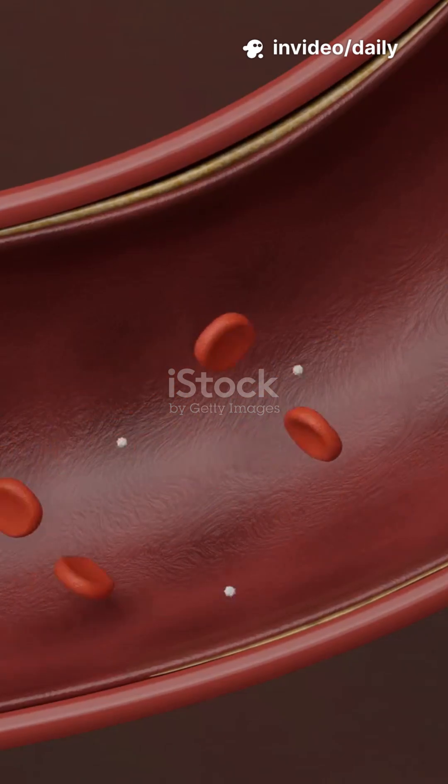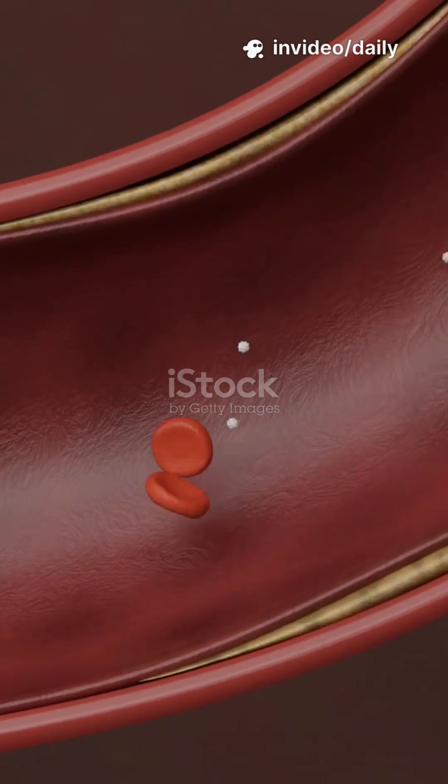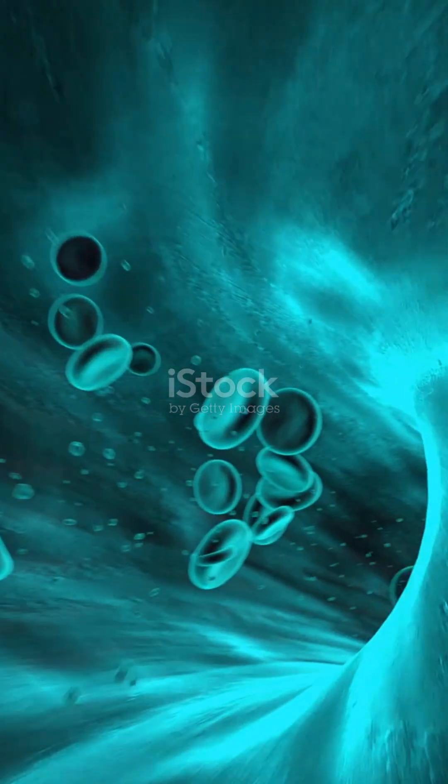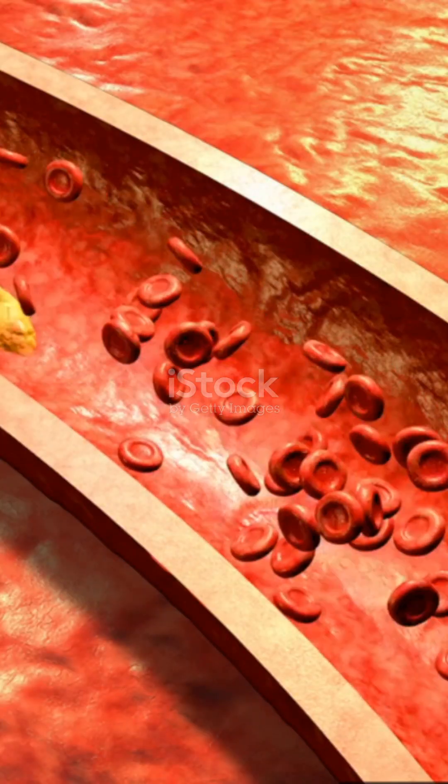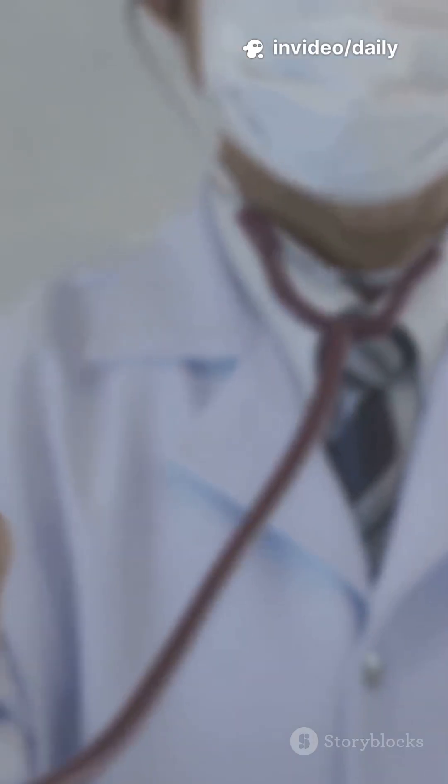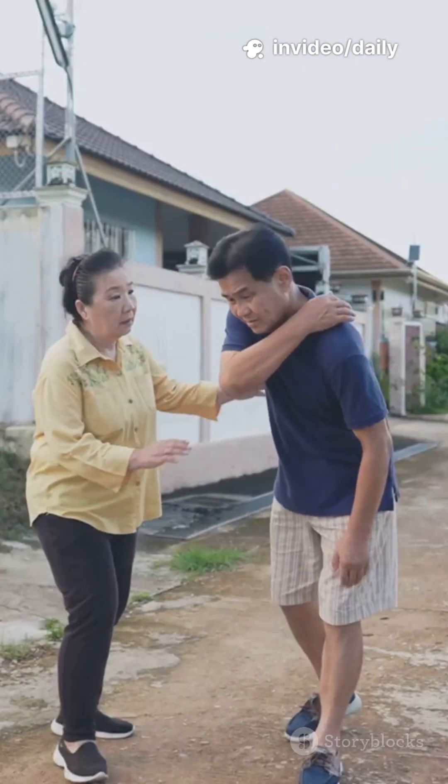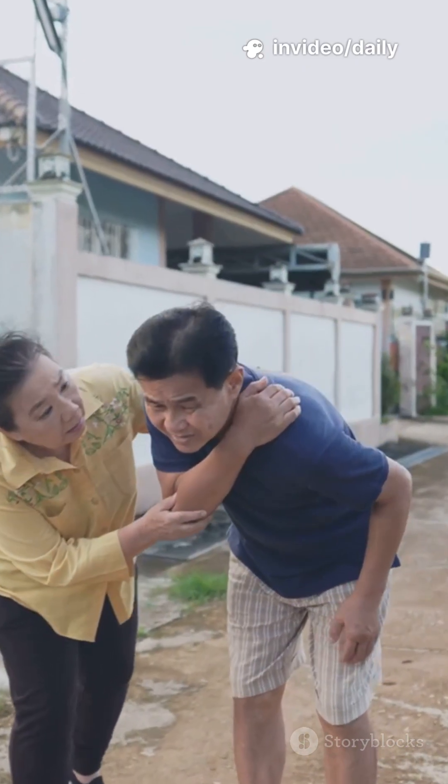Most heart attacks start when a plaque cracks inside a coronary artery. Platelets rush in to plug the damage. A clot forms and starts blocking blood flow. Less flow means heart muscle starves for oxygen. That crushing chest pain. That's the warning.